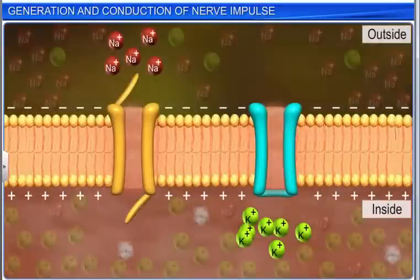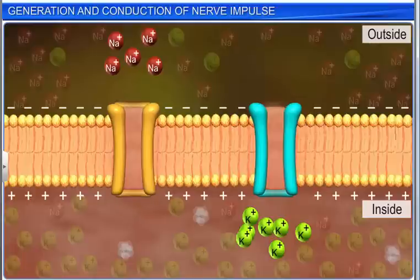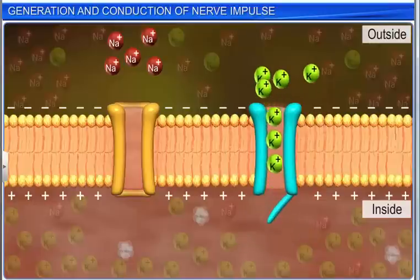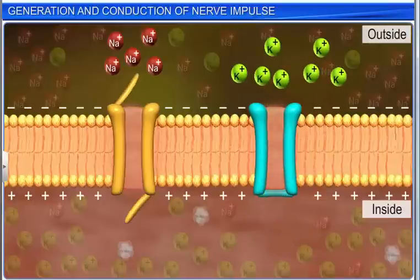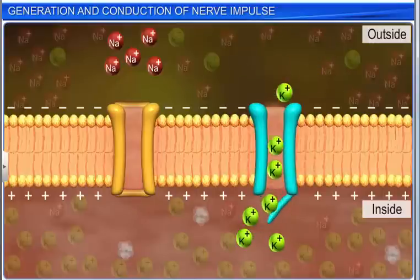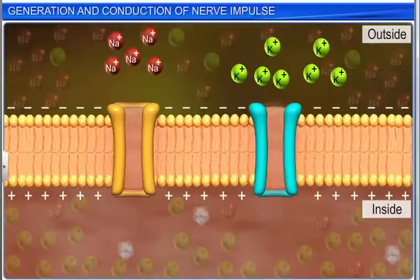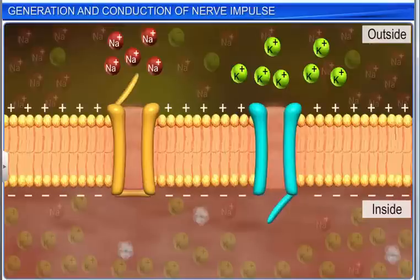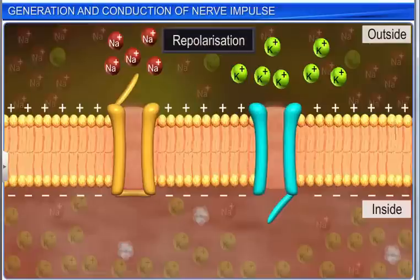At the peak of action potential, the permeability of the membrane to sodium ions decreases while it becomes more permeable to potassium ions. This is because sodium channels start closing and potassium channels start opening. However, this part of the membrane regains its original polarity within milliseconds, and this phenomenon is called repolarization.